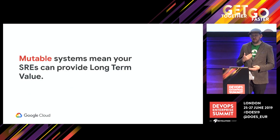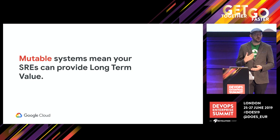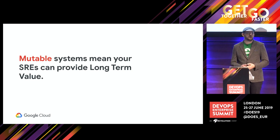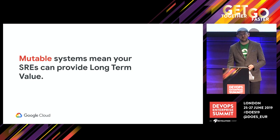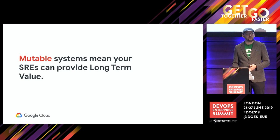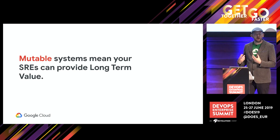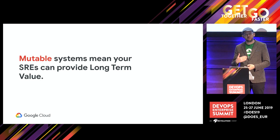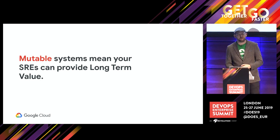Mutable systems mean your SREs working on those systems can provide long-term value. If they're not providing long-term value, then they're hamstrung in their site reliability engineering. They can't provide value long-term — they're just operating the system.